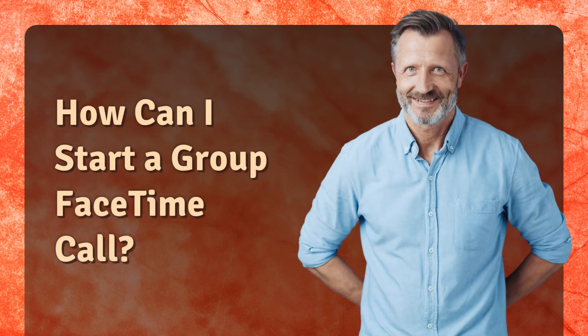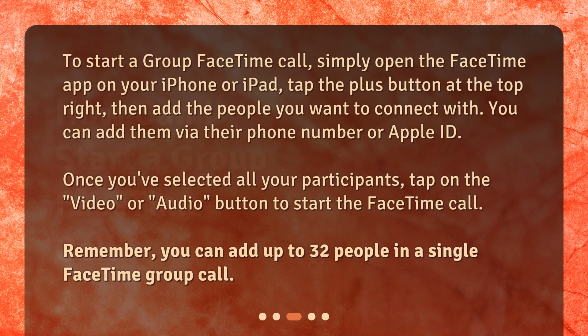How can I start a group FaceTime call? To start a group FaceTime call, simply open the FaceTime app on your iPhone or iPad, tap the plus button at the top right, then add the people you want to connect with. You can add them via their phone number or Apple ID. Once you've selected all your participants, tap on the video or audio button to start the FaceTime call. Remember, you can add up to 32 people in a single FaceTime group call.